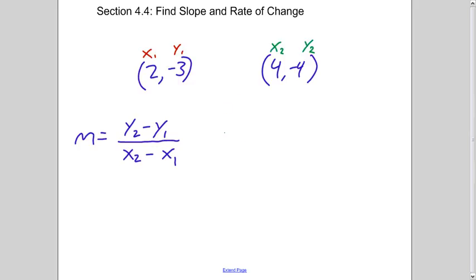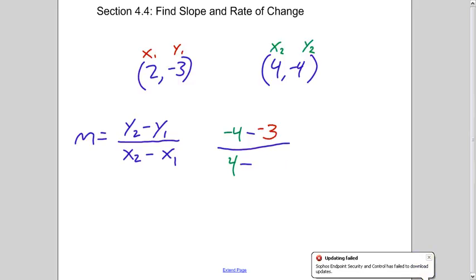y2 goes first, so negative 4 minus y1, which is negative 3, over x2, or positive 4, minus x1, which is a positive 2.